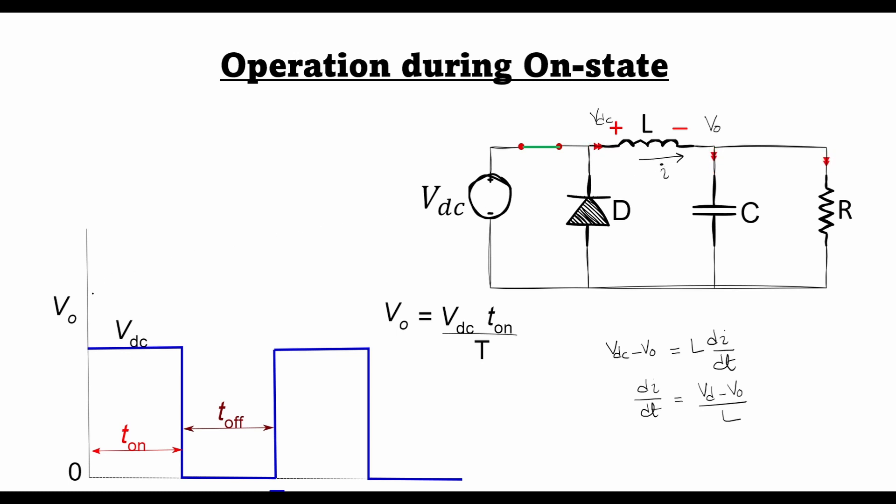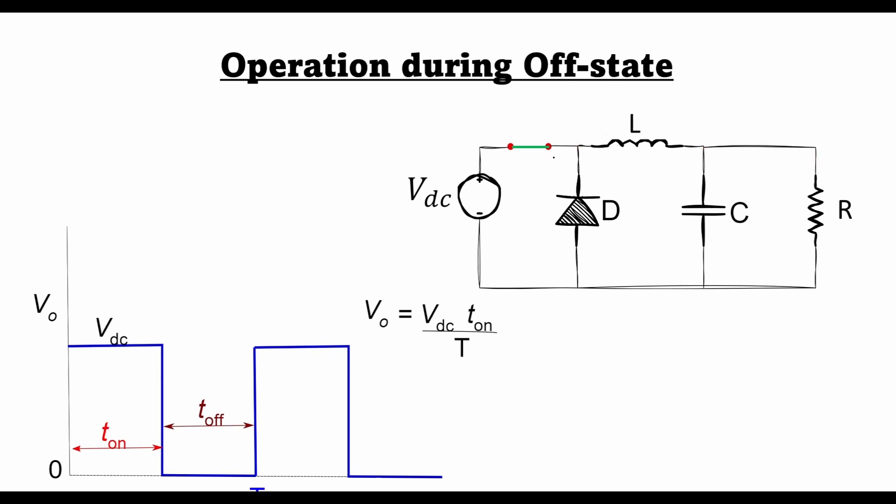If I were to plot this, it would look like a rising curve with a slope VDC minus V0 divided by L, and this is my I0 during the T on operation. Now let's see what happens when the switch is turned off.